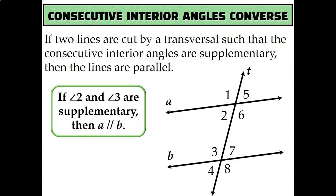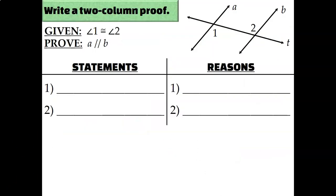So let's use these theorems to write some proofs. The first step of a proof is the easiest because you get to just copy and paste the given statement: angle 1 is congruent to angle 2, and your reason is that it was given. After you write down your given statement, label that on the diagram — put matching arcs on angle 1 and angle 2.